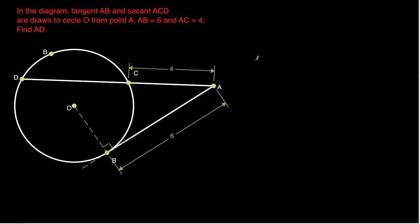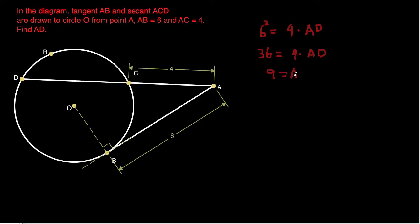Using the result from the applet: 6 squared equals 4 times AD. So 36 equals 4 times AD, and solving for AD gives AD equals 9. So DC equals 5 and AD equals 9. That's one way of solving the problem.